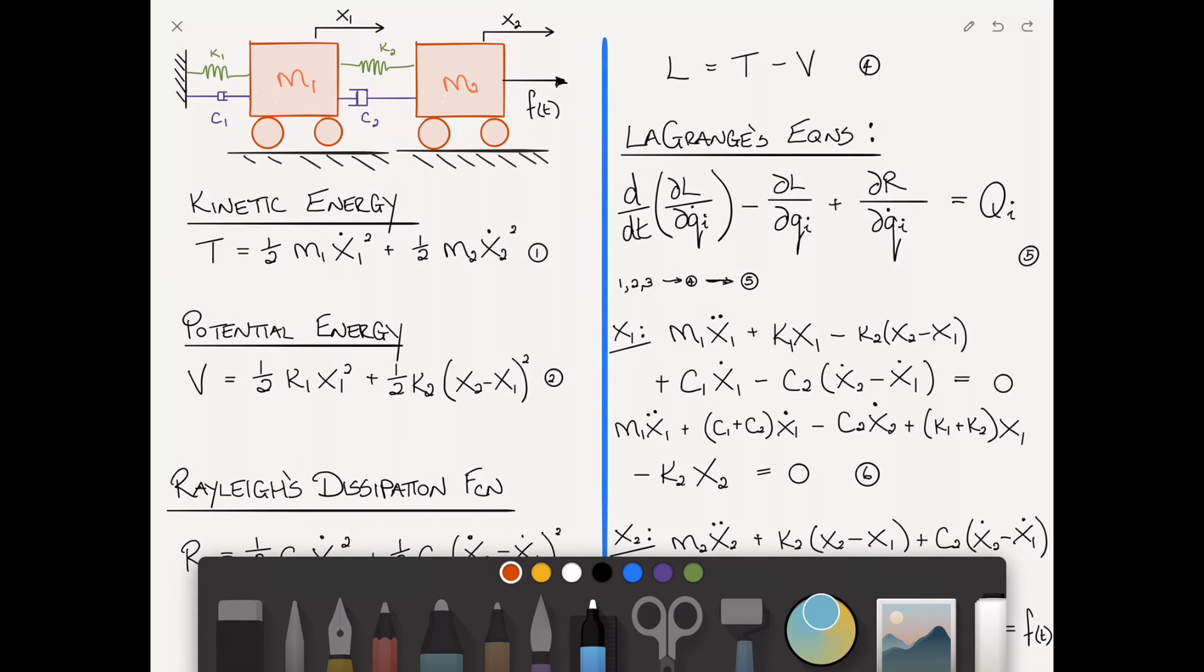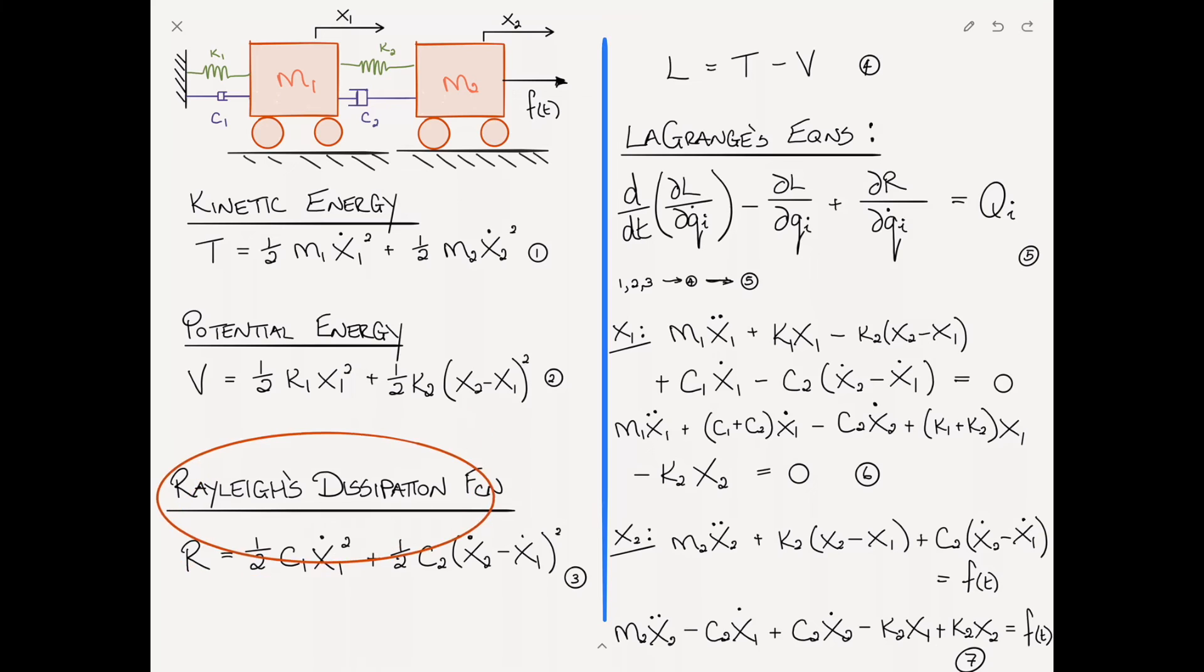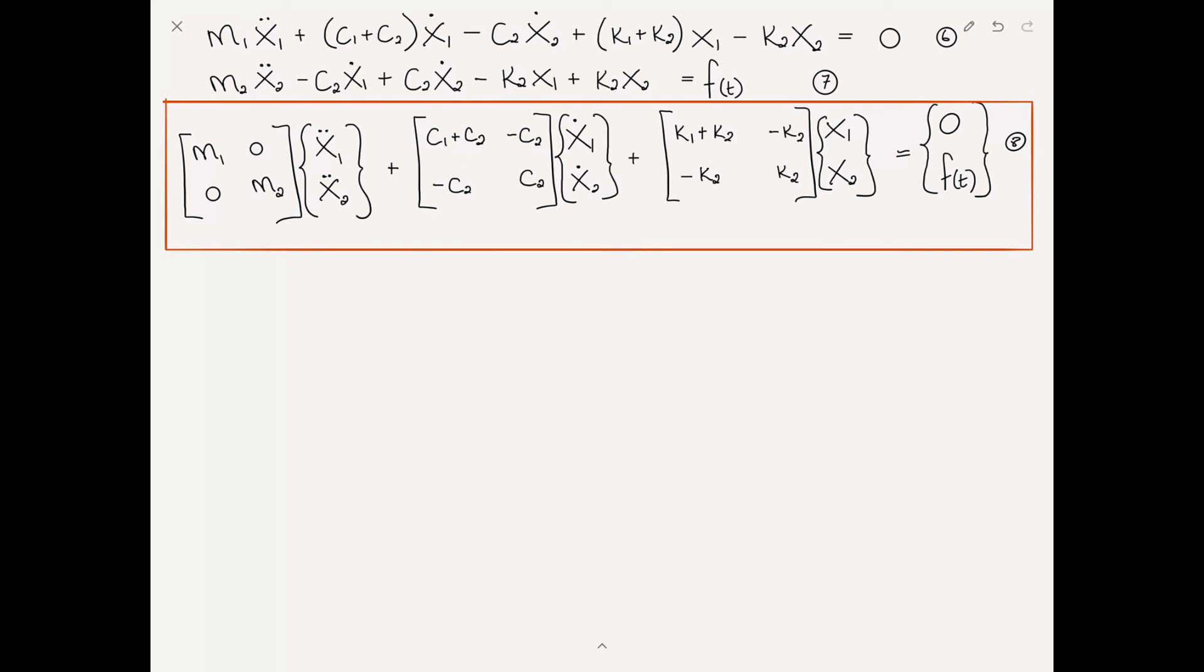To recap: we incorporated damping by adding Rayleigh's dissipation function, which looks like kinetic energy - a half times c times velocity squared. We extended Lagrange's equations to add the partial derivative of R with respect to generalized velocity. If you set c values to zero, this reduces to the undamped equations. I hope you found this useful. Please like so others can see it, and leave any questions in the comments. Thank you for watching!